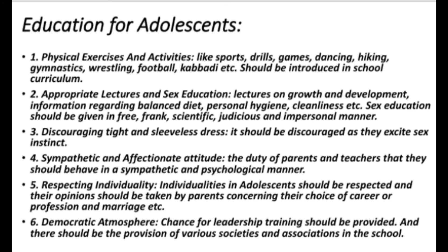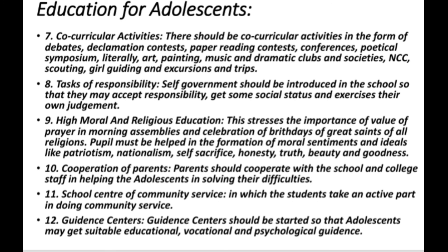Third, sympathetic and affectionate attitude — the child gets perturbed when he observes various physical and psychological changes taking place in him; hence, it is the duty of parents and teachers to behave in a sympathetic and understanding manner. Fourth, respecting individuality — the individuality of adolescents should be respected and their opinion taken by parents in choices of career, profession, and marriage. Fifth, democratic atmosphere — there should be a democratic atmosphere in the school, with opportunities for leadership training and provision of various societies and associations. Sixth, co-curricular activities — since adolescence is a period of intellectual development, there should be co-curricular activities in the form of debates, declamation contests, paper reading contests, conferences, literary, art, painting, musical and dramatic clubs, NCC, scouting, girl-guiding, and excursions and trips to places of historical, geographical, scientific, and cultural importance. Seventh, tasks of responsibility — tasks of responsibility should be given so that self-government is introduced in school, enabling adolescents to accept responsibility, gain social status, and exercise their own judgment.